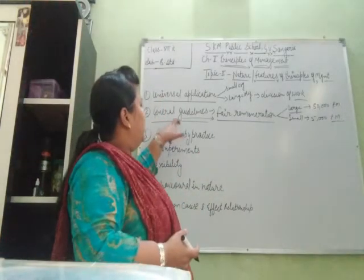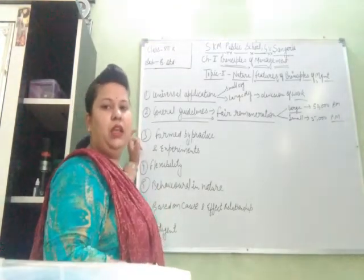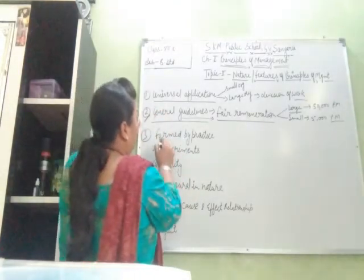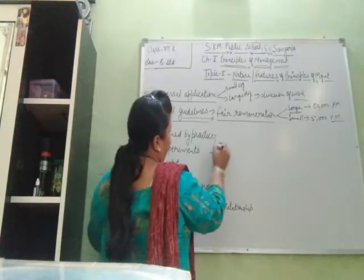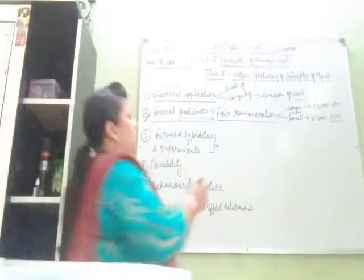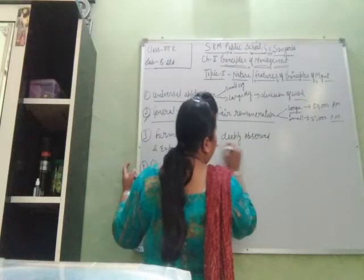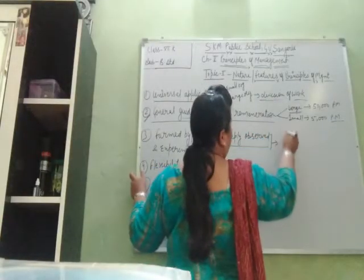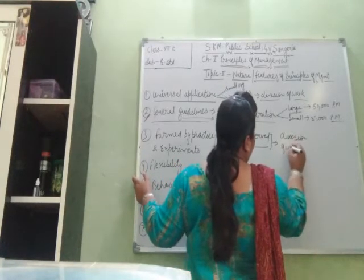So, General Guidelines means that Principles of Management are just guidelines providing direction for the organization on how to work. Moving to the next point: Principles of Management are Formed by Practice and Experiments. These are not directly given — they are deeply observed, then applied in an organization. We take the example of Division of Labor.